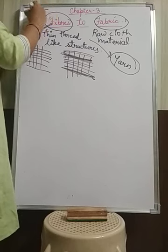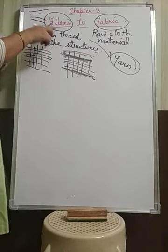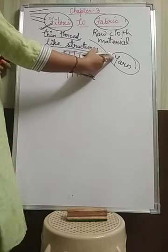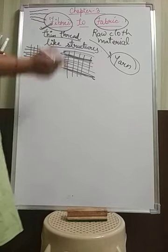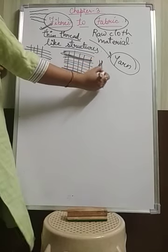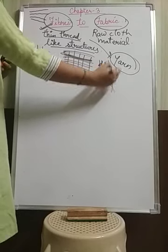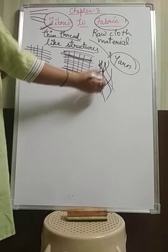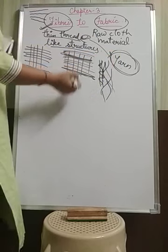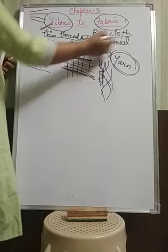So fibers are actually the thin strands — thin thread-like structures. The yarn from which you weave a cloth is made up of fibers. Yarn is the composition of twisted fibers. The fibers are twisted together and then we get a long thread, and that long thread is known as yarn. When these yarns are woven in a particular pattern, then we get the cloth material.